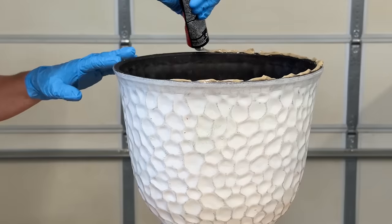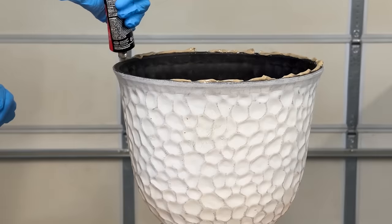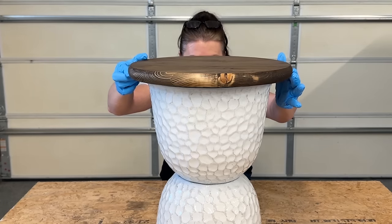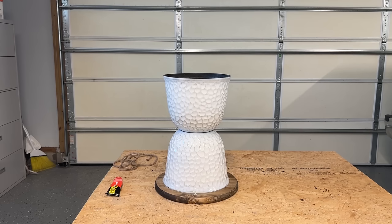Once your glue has set up we're going to attach that wood piece directly to the top of one of those planters using that same Loctite Premium. Just center that on top, apply some pressure, and allow that glue to set up.